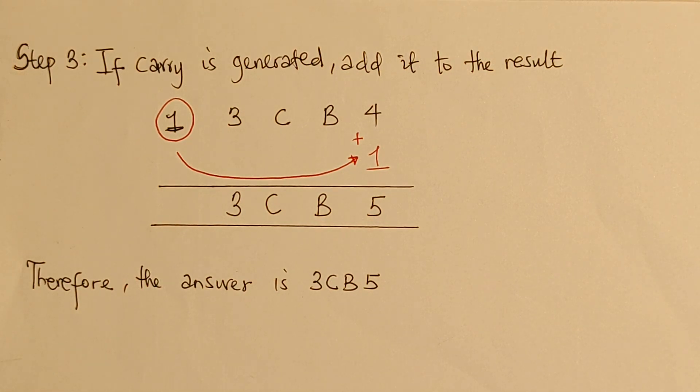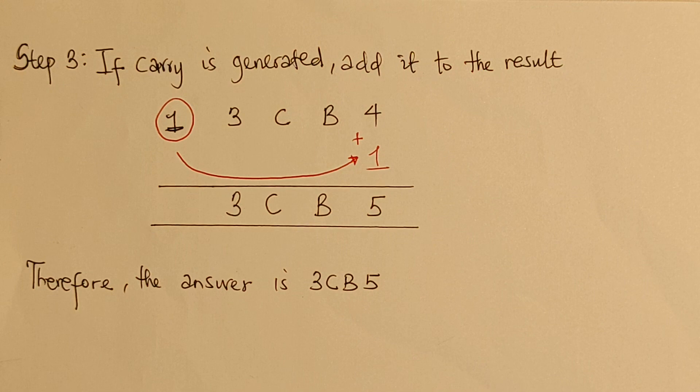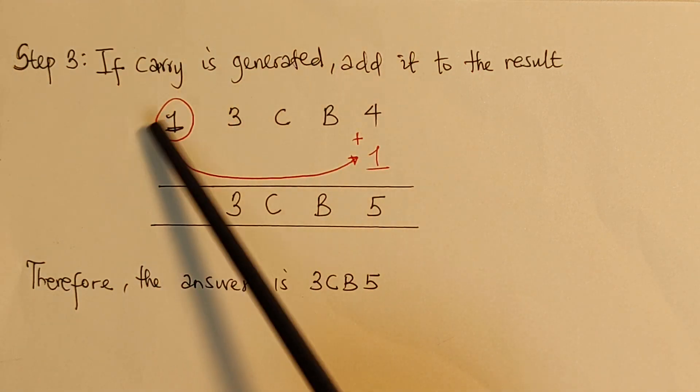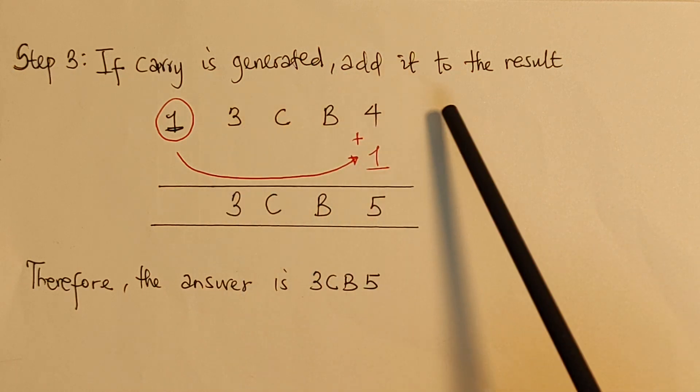So, I just told you how to identify when carry is generated. So, we are moving over to step 3, which is to tell if carry is generated, then add it to the result. Now, what are we trying to do? We are trying to bring this carry that was generated in step 2 and bring it to this value. Now, take note, we are removing this, but we are adding to this value, 3CB4.